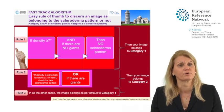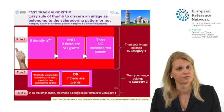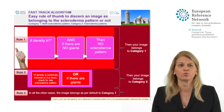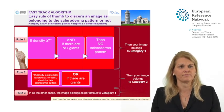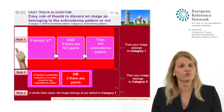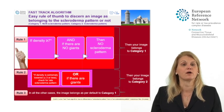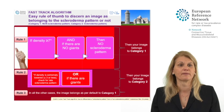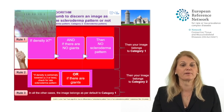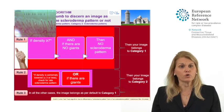You apply the algorithm as follows. Rule number one: if your density or number of capillaries is seven or more, and if you have no giants, then for sure your image belongs to category one — a non-scleroderma pattern. Here I count more than seven capillaries and there are no giants.